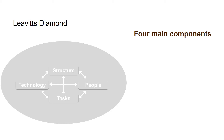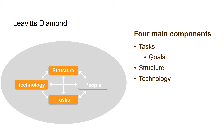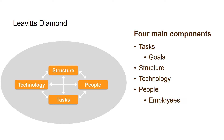According to Levitt's diamond model, the best way is to split the organization into four components: Tasks (also sometimes called goals), Structure, Technology, and People (also sometimes called employees). These four components are distinct from each other, but at the same time there is an interaction between them. The four components make up the entire organization. The surroundings can of course also affect the organization, and thereby the individual components.